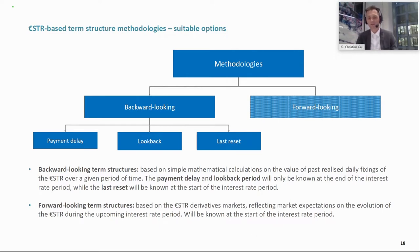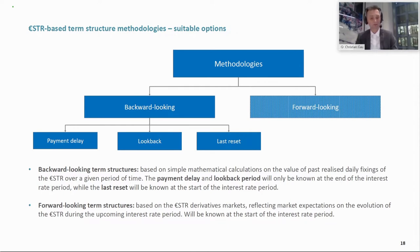However, the starting point for developing all these alternatives is that aligning observation and interest periods is operationally very difficult and provides a number of challenges to build into bank workflows. So what are the alternatives to address the issue of interest payments made at the end of the coupon period? There are three: payment delay, lookback, and last reset. Payment delay and lookback apply backward-looking in-arrears patterns, whereas the last reset method looks at rates in advance.